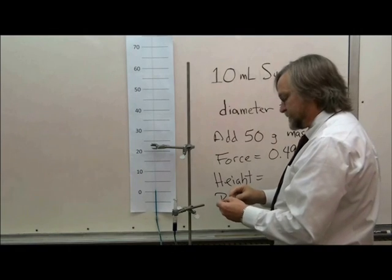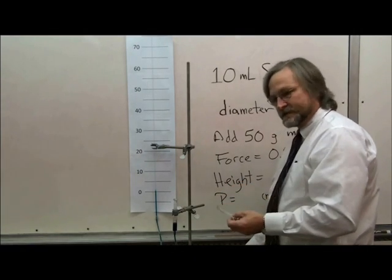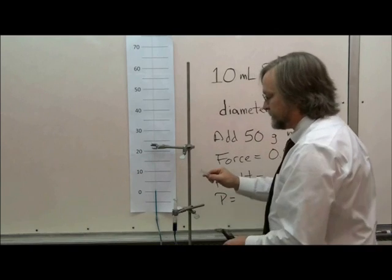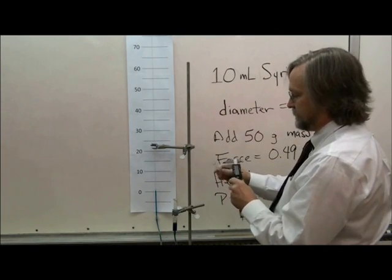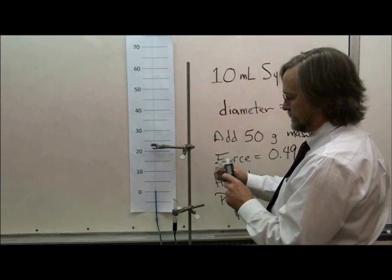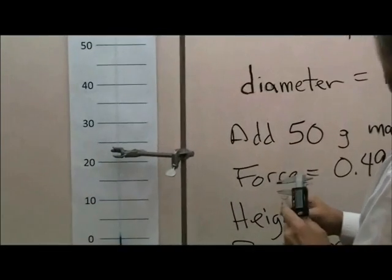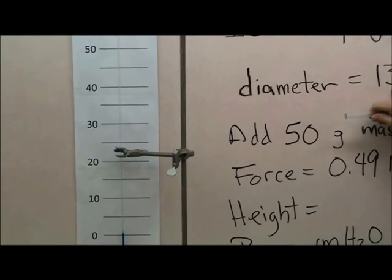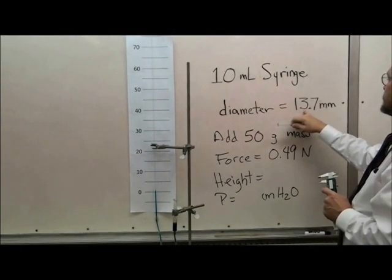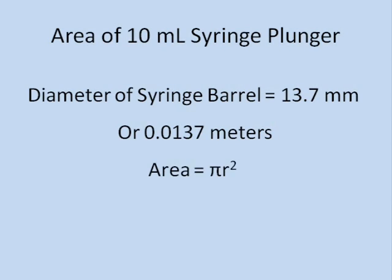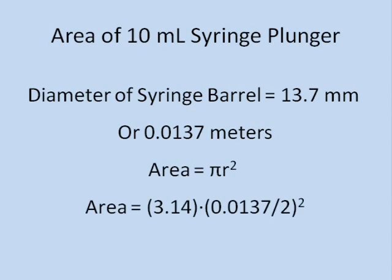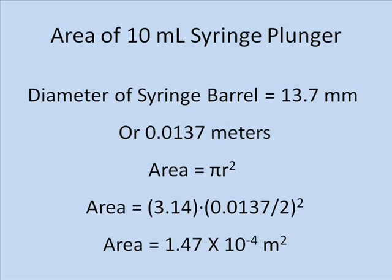Since pressure is equal to force divided by area, we need to know the cross-sectional area of the plunger in the syringe. We can do that by measuring the diameter of the plunger with a caliper. We see that the diameter of this syringe plunger is 13.7 millimeters. Now that we've measured the diameter, we can use a little geometry to calculate the surface area of the plunger — in this case, 1.47 times 10 to the minus 4th square meters.